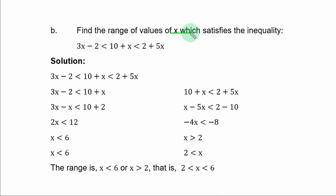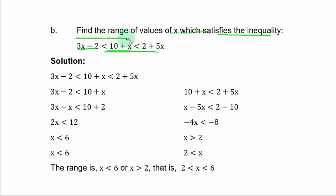Find the range of values of x which satisfies the inequality: 3x - 2 < 10 + x < 2 + 5x. You cannot obtain a direct solution with this compound inequality — it has 3 parts. Break it down: the middle term 10 + x connects the 1st and 3rd parts. Form two separate inequalities and solve them respectively by collecting like terms.